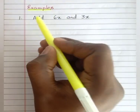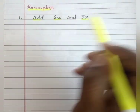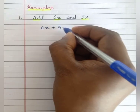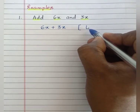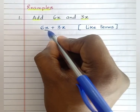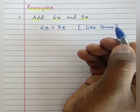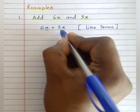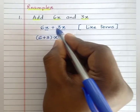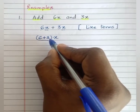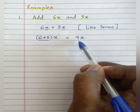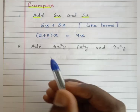Now we will solve a few examples. Add 6x and 3x. That is 6x plus 3x. If you observe, 6x and 3x have the same variable x with exponent 1. Therefore, 6x and 3x are like terms, so we can add the numerical coefficients: 6 plus 3 gives us 9x.